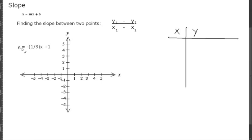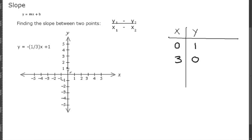Let's look at another example: y = -1/3 x + 1. Plugging in 0 for x, we get 0 plus 1 equals 1. Plugging in 3 for x, negative 1/3 times 3 is negative 1, and negative 1 plus 1 is 0. We plot (0, 1) and (3, 0) and connect those points.